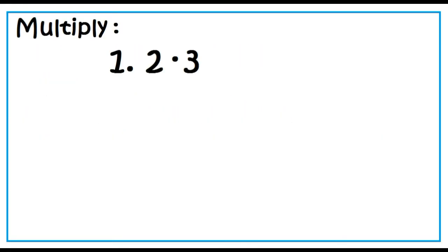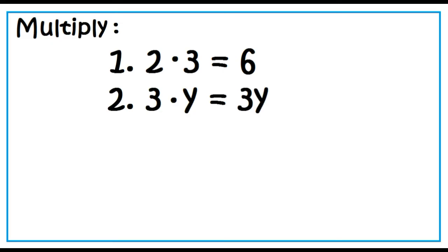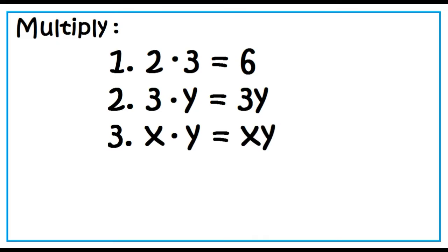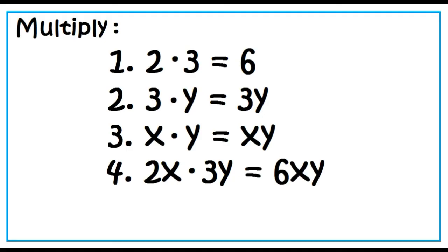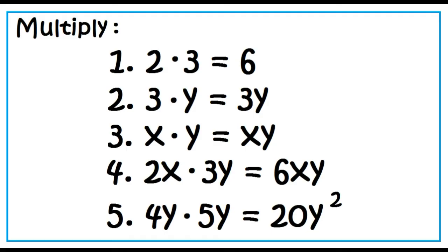Let's multiply. Number 1: 2 times 3 equals 6. Number 2: 3 times y equals 3y. Write the number first before the letter. x times y is equal to xy, usually written in alphabetical order. 2x times 3y equals 6xy — multiply the coefficients, then multiply the variables. 4y times 5y equals 20y squared.